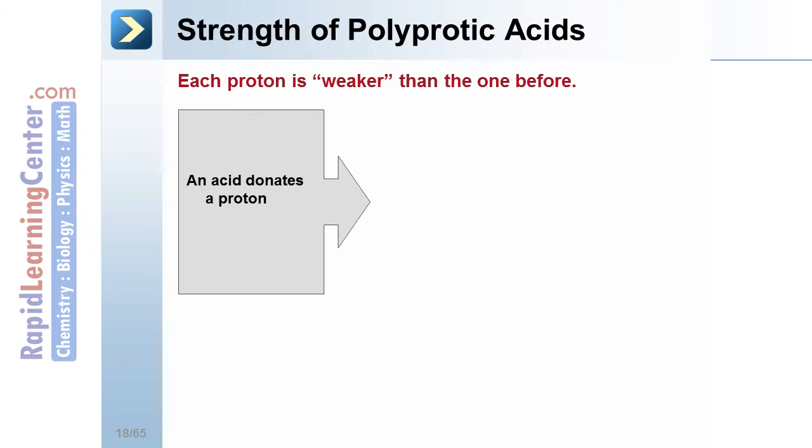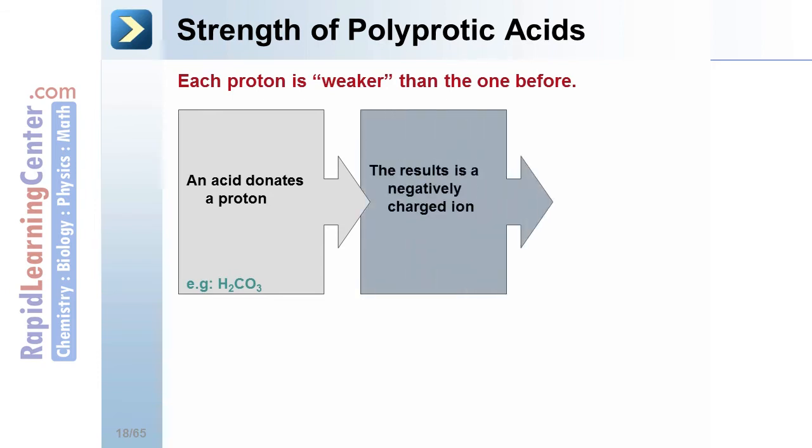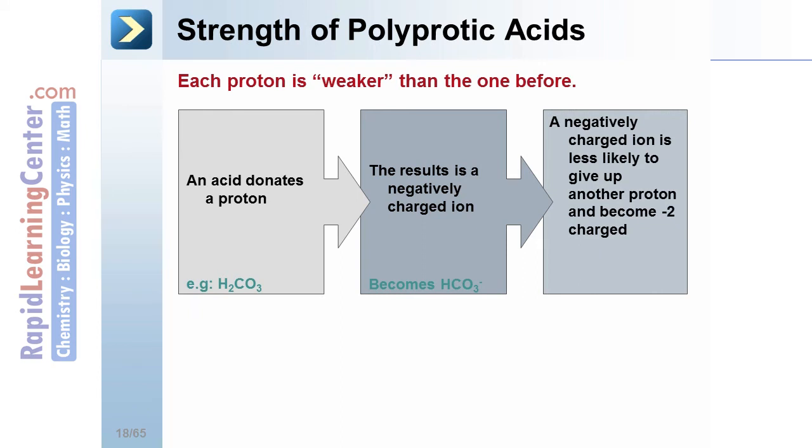An acid donates a proton. For example, H2CO3. This results in a negatively charged ion, HCO3-1 in this case. This negatively charged ion is less likely to give up another proton to become a negative 2 ion, which would be CO3-2 in this example. Therefore, H2CO3 is a stronger acid, more likely to donate a proton, than HCO3-1.